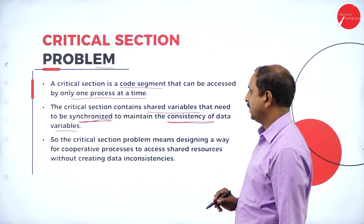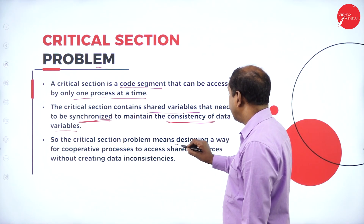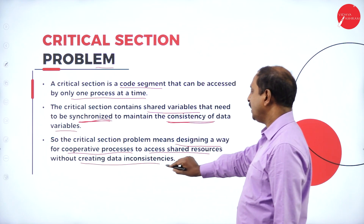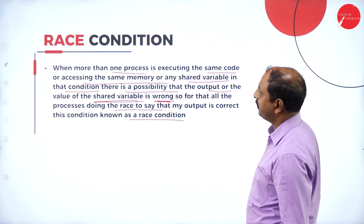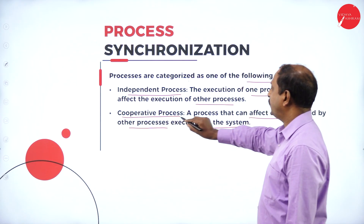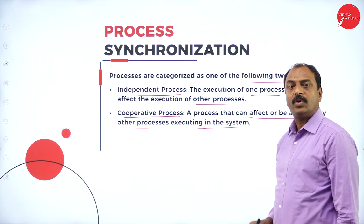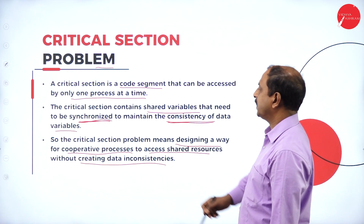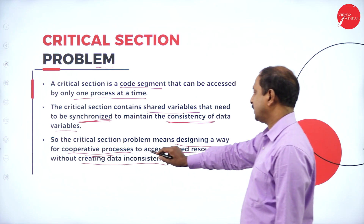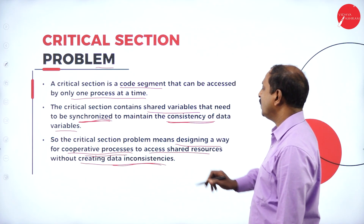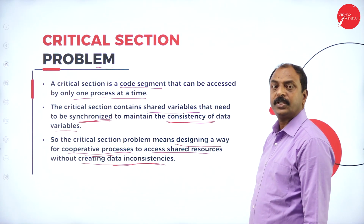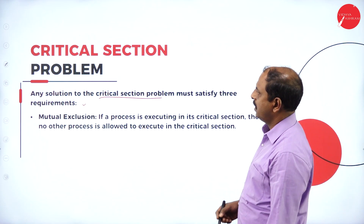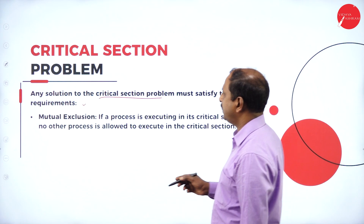The critical section problem means designing a way for cooperative processes to access shared resources without creating data inconsistency. As we saw, cooperative processes can affect each other, so the critical section is used to avoid this. Any solution to the critical section problem must satisfy the following three conditions: mutual exclusion, progress, and bounded waiting.